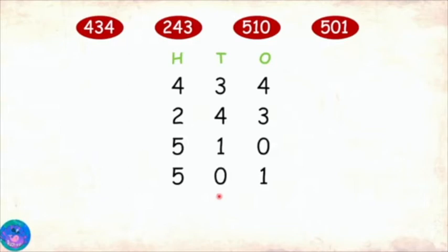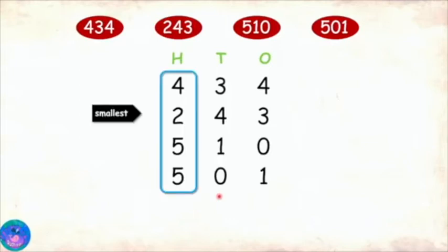Then I will start with comparing the digits in the hundreds place because that is the biggest place having digits. And two is the smallest. So the number 243 is the smallest.